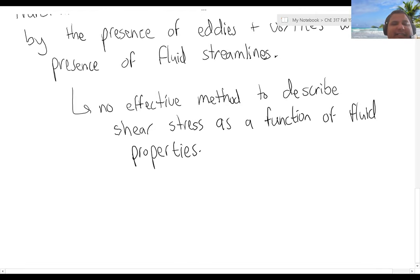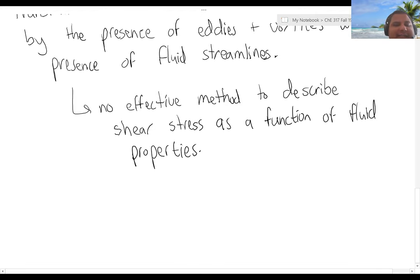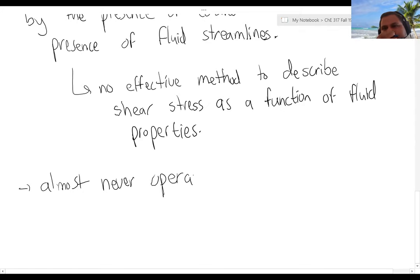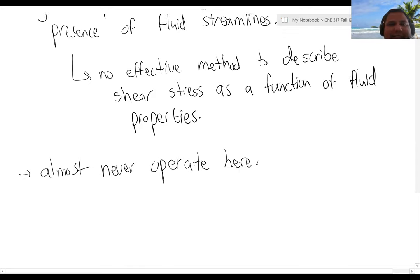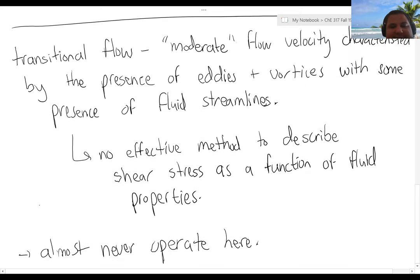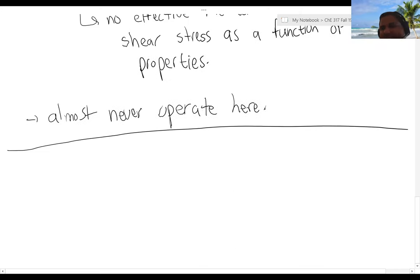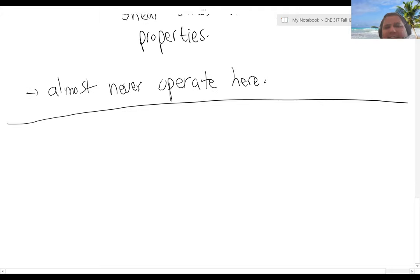When it comes to transitional flow, you almost never operate here, largely due to the unpredictability in behavior. If you can't predict what's going to happen, you're at the mercy of the operation itself and you don't have a system that's under control, and nobody wants that.